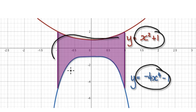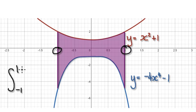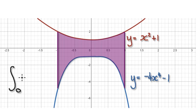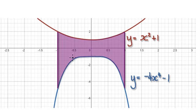The whole shape is even, so rather than integrating from negative 1 to positive 1, just concentrate on evaluating it from 0 to 1, and then later multiply the whole thing by 2.